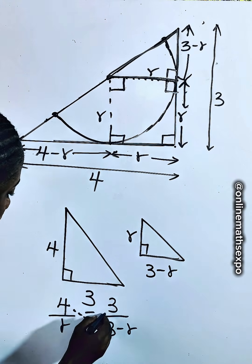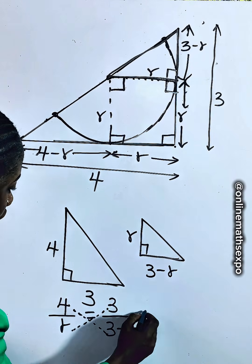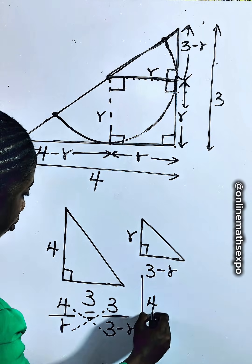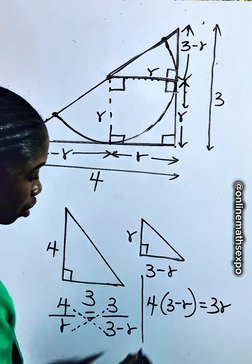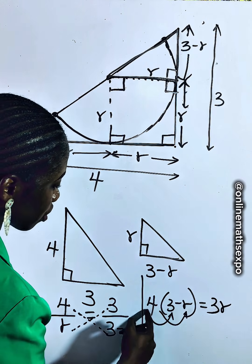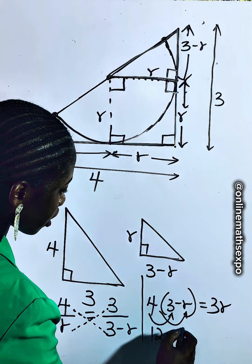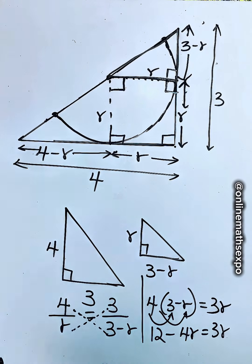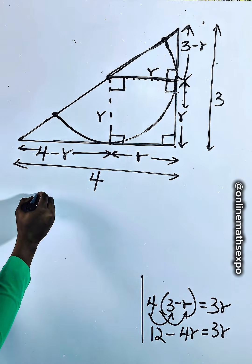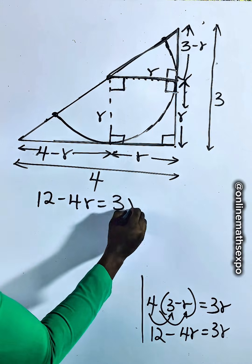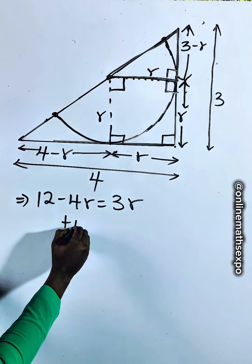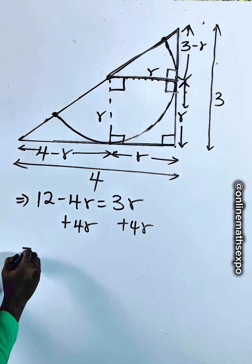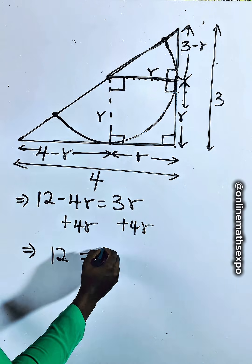Now let's work with this — we cross-multiply. 4 multiplies the whole of 3 minus R, giving us 4 times (3 minus R). Then 3 multiplies R, giving us 3R. Distributing: 4 times 3 gives 12, and 4 times R gives negative 4R, so we have 12 minus 4R equals 3R. Adding 4R to both sides: 12 equals 7R.